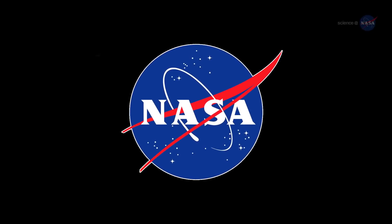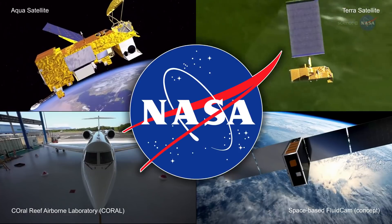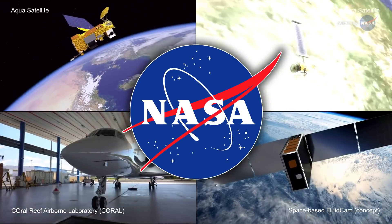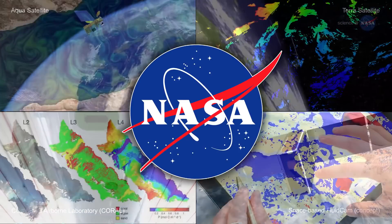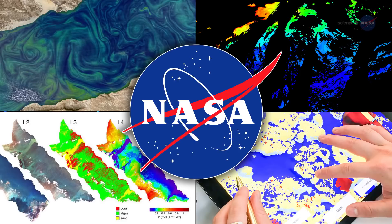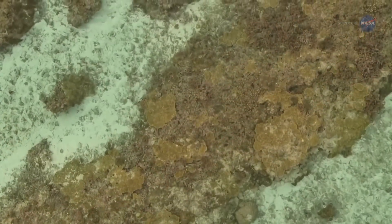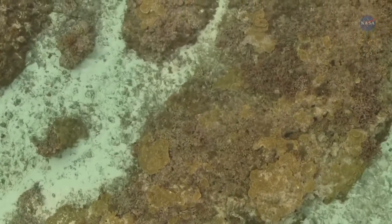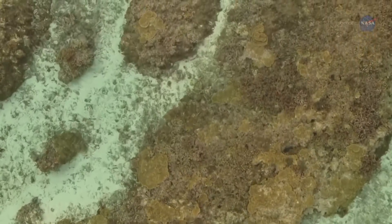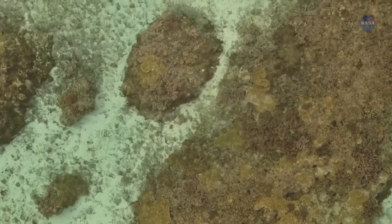NASA technologists are developing sensors that can improve measurements of Earth's oceans, creating new instruments to study aspects of our home planet we haven't before been able to research. Imaging what's below the ocean's surface requires the development of a new instrument capable of improving the information available to scientists.